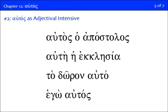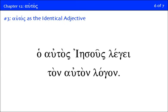How would you translate ego autos? I, myself. You look at the word it modifies and figure out which English reflexive pronoun makes sense: 'the apostle himself,' 'the church itself,' 'the gift itself,' 'I, myself.' Autos has to be in the predicate position to function as an adjectival intensive. So you can have ho apostolos autos — you look at the sentence and decide: is it in the predicate position where you supply 'is,' or is it functioning as the adjectival intensive? It's almost always nominative and near the front of the sentence, so these will stand out.